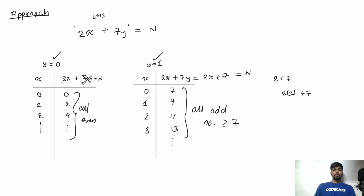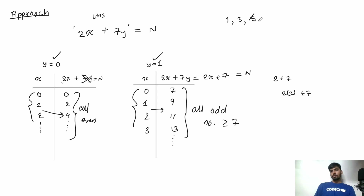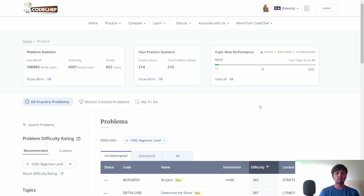So with y = 0 we can get any even number, and with y = 1 we can get any odd number greater than or equal to 7. The only numbers left out are 1, 3, and 5 — the three odd numbers we can never represent for any non-negative integer value of x and y. Our approach is simply: if n equals 1, 3, or 5, output 'No'; otherwise output 'Yes'.